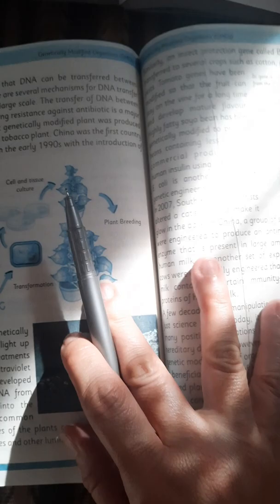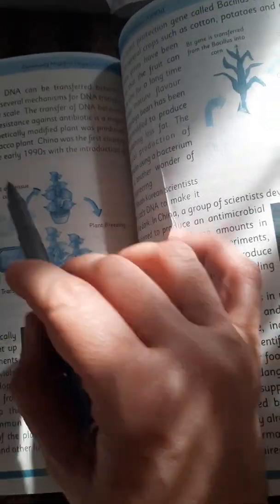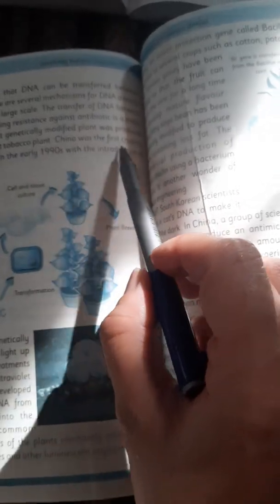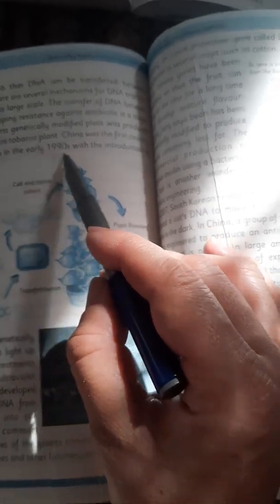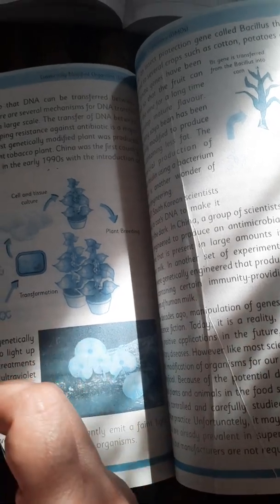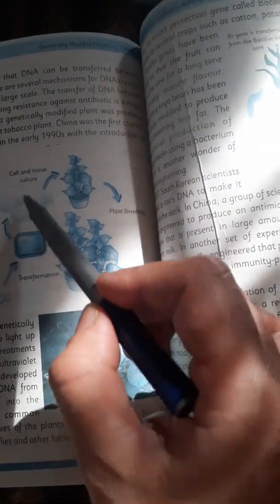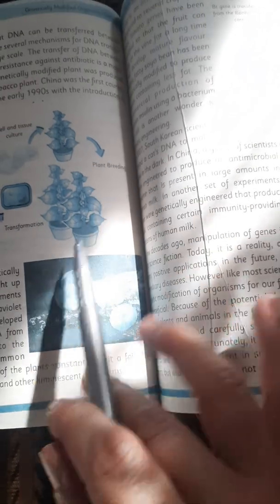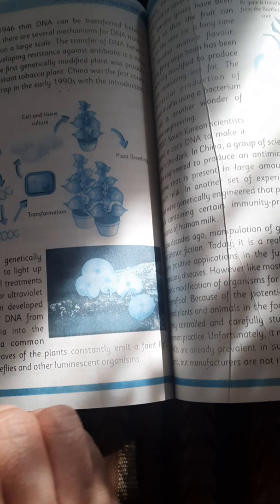The first genetically modified plant was produced in 1983 using an antibiotic-resistant tobacco plant. China was the first country to commercialize a transgenic crop in the early 1990s with the introduction of virus-resistant tobacco. Now here's bacteria, DNA extraction and isolation, cloning and designing genes, transformation, cell and tissue culture, and plant breeding. New plants started being made.